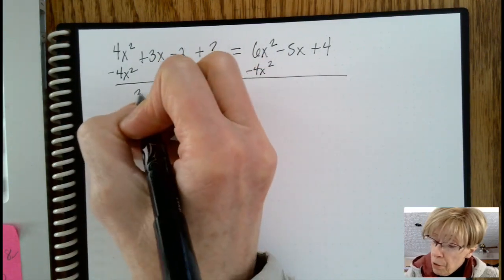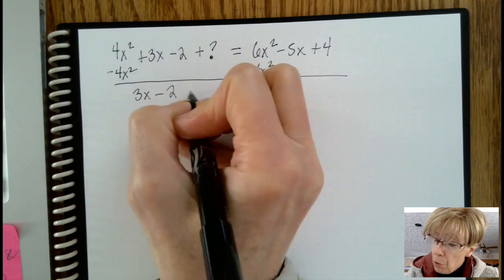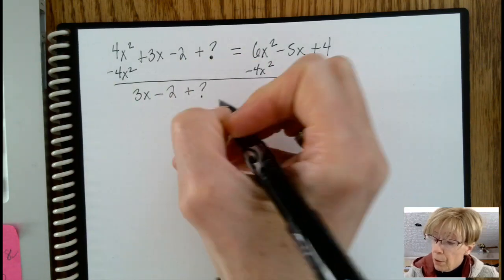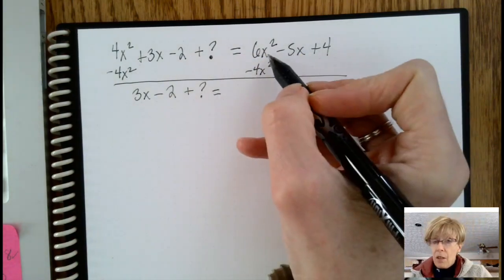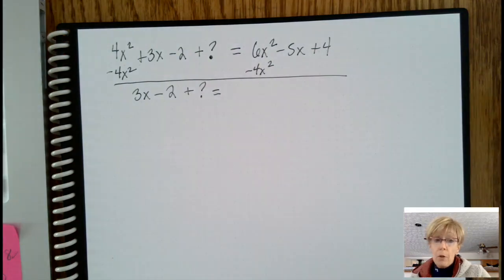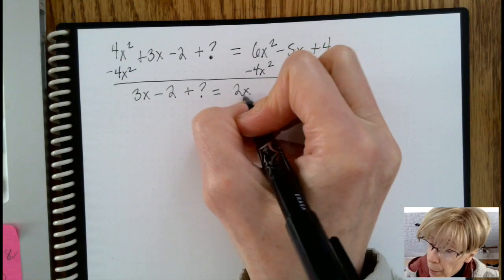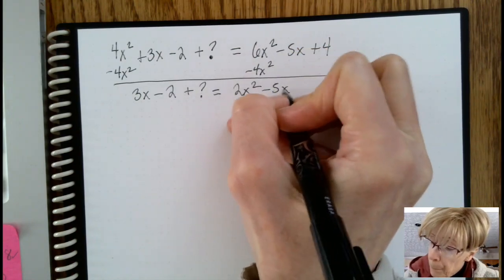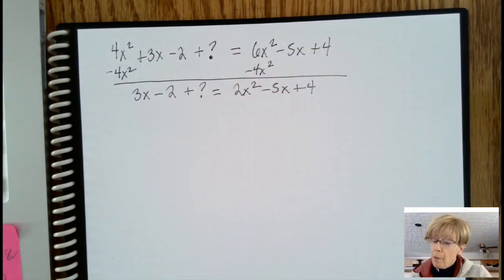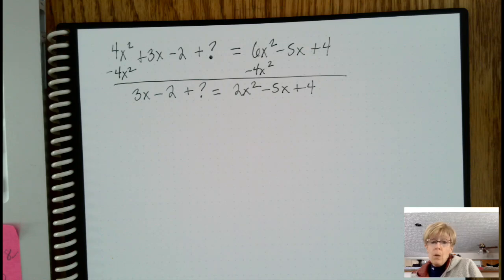Eventually what we're trying to do is get the question mark by itself. So again, notice how I line that up with the minus 5x because they're like terms. So over here on the left we still have minus 2 plus question mark, and then here we have 2x squared minus 8x plus 4.